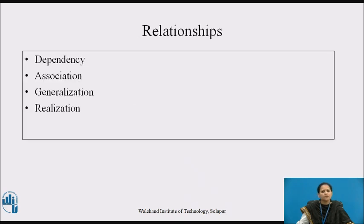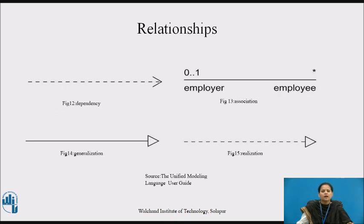There are four kinds of relationships in UML: dependency, association, generalization and realization. A dependency is a semantic relationship between two things in which a change to one thing — the independent thing — may affect the semantics of the other thing, the dependent thing. Graphically, a dependency is rendered as a dashed line, possibly directed and occasionally including a label, as shown in figure 12.